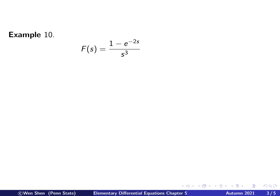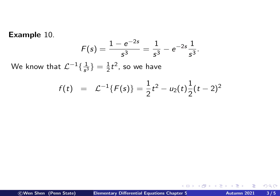Let's take our first example. Capital F of s is 1 minus e to the negative 2s, all over s cubed. We can break this into two terms. The first term is 1 over s cubed, which we know how to find the inverse transform. The second term is e to the negative 2s times 1 over s cubed. We already know that the inverse transform of 1 over s cubed is one-half t squared, so the first term gives us one-half t squared.